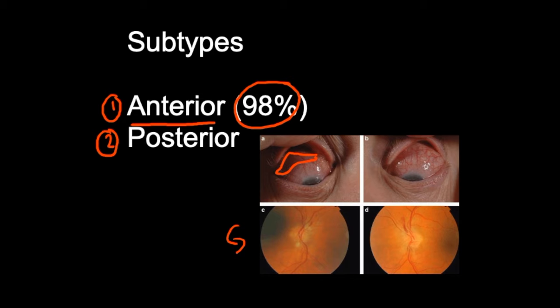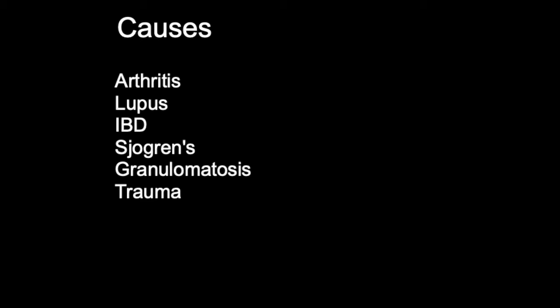Scleritis is often linked with an autoimmune disease, however sometimes there's no known cause. It is associated with conditions such as arthritis, lupus, inflammatory bowel disease (including Crohn's disease and ulcerative colitis), Sjögren's syndrome, granulomatosis, and connective tissue disorders including scleroderma. It can also potentially be caused by trauma to the eye, and much less commonly by parasitic or infectious causes.